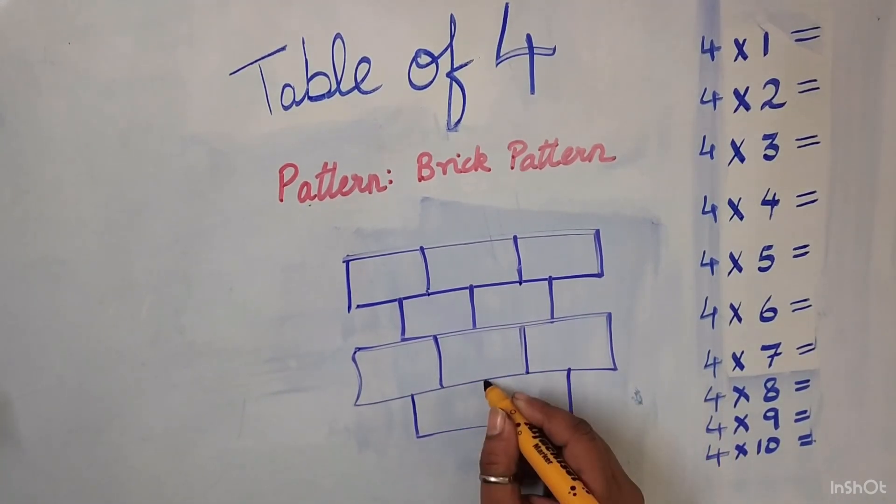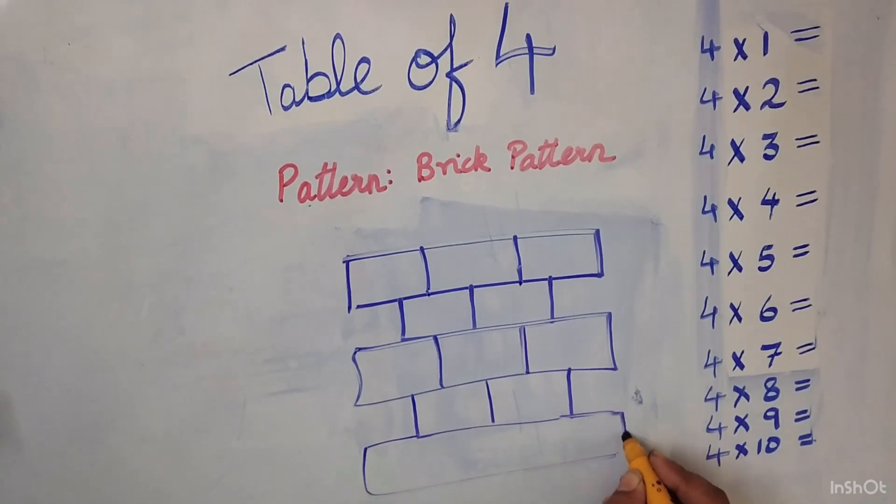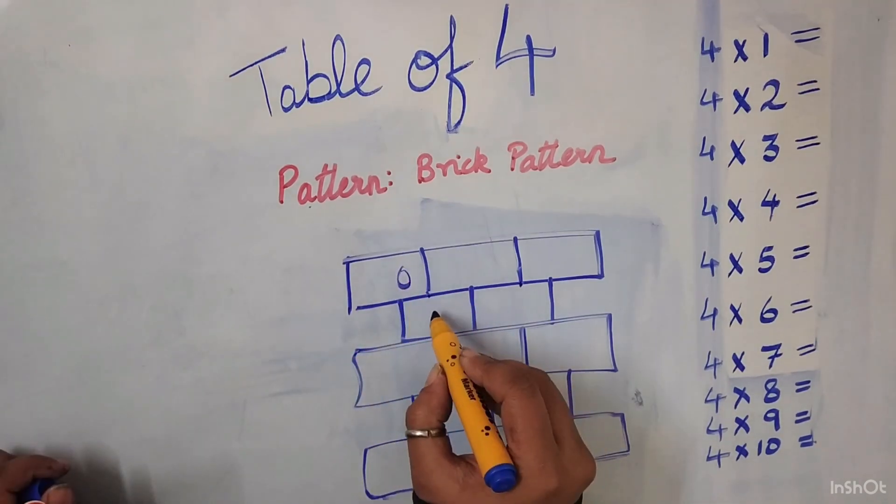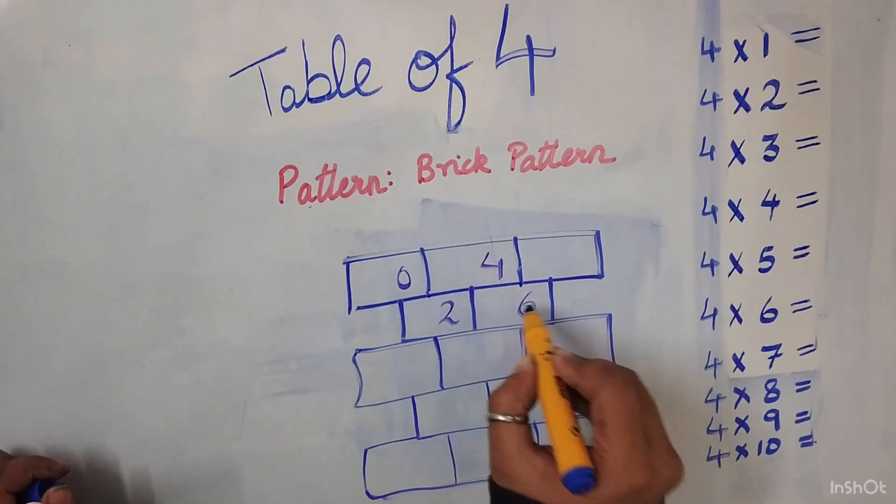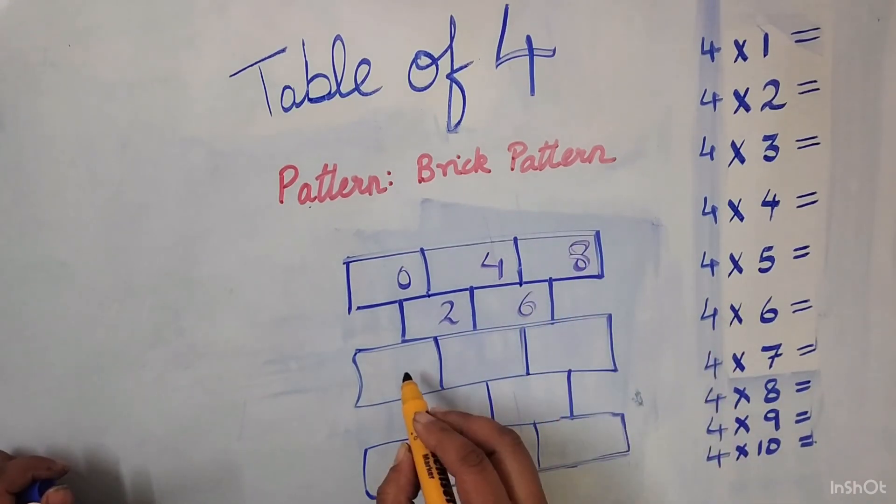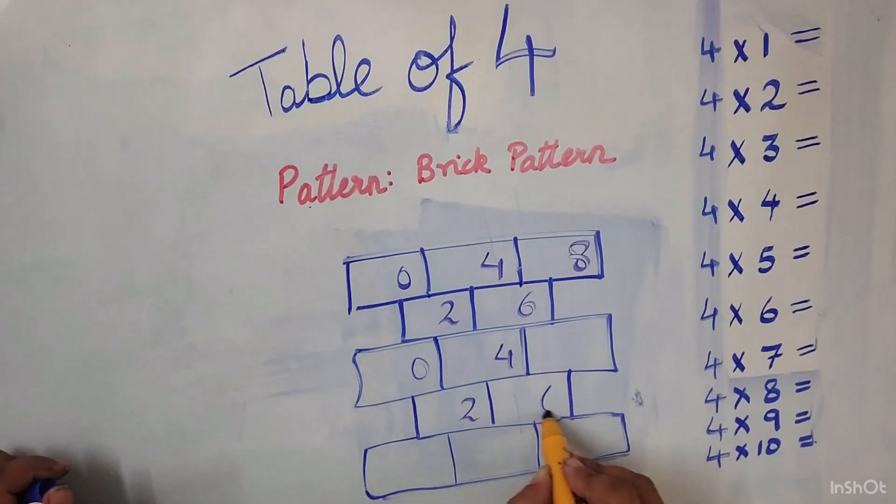We will continue the brick pattern till the point we get as many bricks as many answers we need for our table. Now we will enter the pattern 0, 2, 4, 6 and 8. Again 0, 2, 4, 6 and 8.